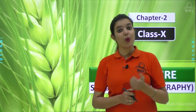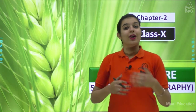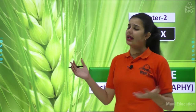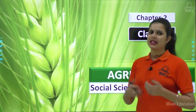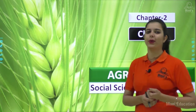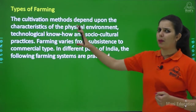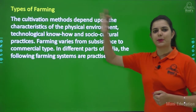India was earlier known as an agrarian economy because most of the people were engaged in agriculture and we used to grow crops. With time things changed and people shifted to other sectors as well. So now, the first thing we will study is the types of farming.